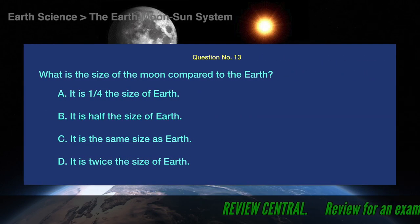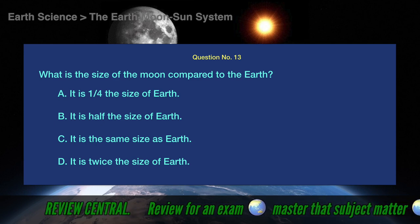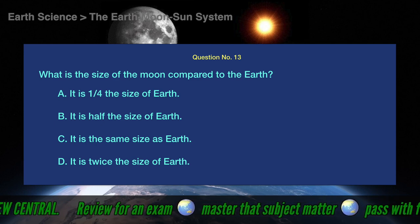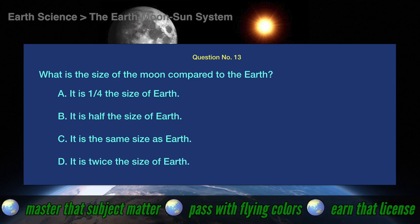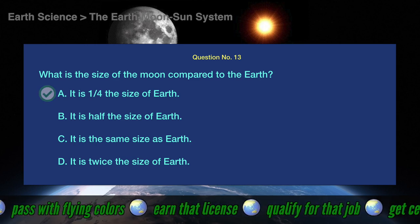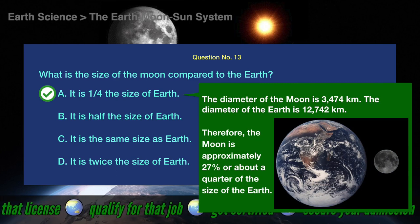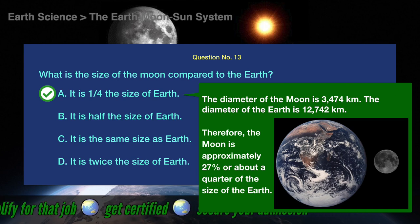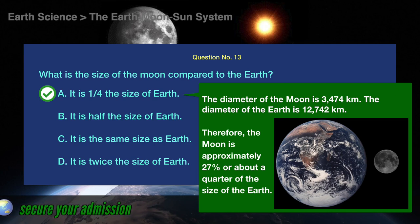Question number 13. What is the size of the Moon compared to the Earth? A. It has one-fourth the size of Earth. B. It is half the size of Earth. C. It is the same size as Earth. D. It is twice the size of Earth. The correct answer is A. It has one-fourth the size of Earth. The diameter of the Moon is 3,474 kilometers, while the diameter of the Earth is 12,742 kilometers. This means that the Moon is approximately 27%, or about a quarter of the size of the Earth.